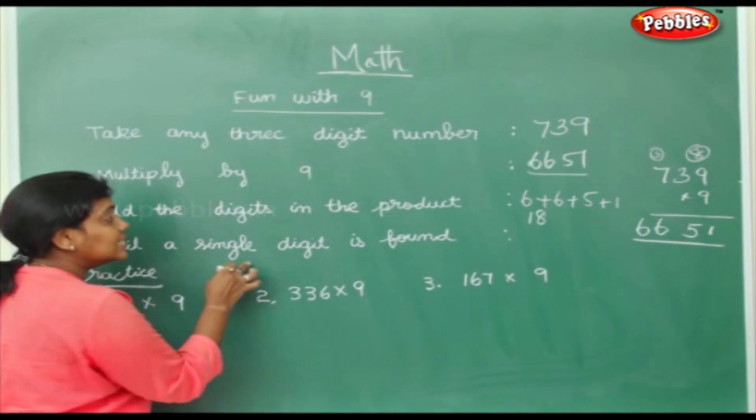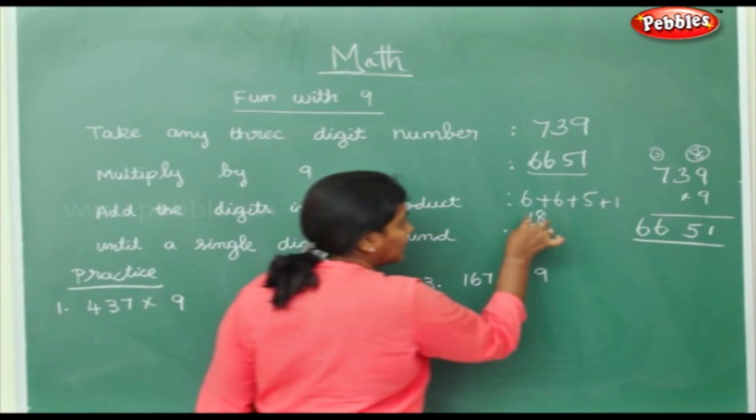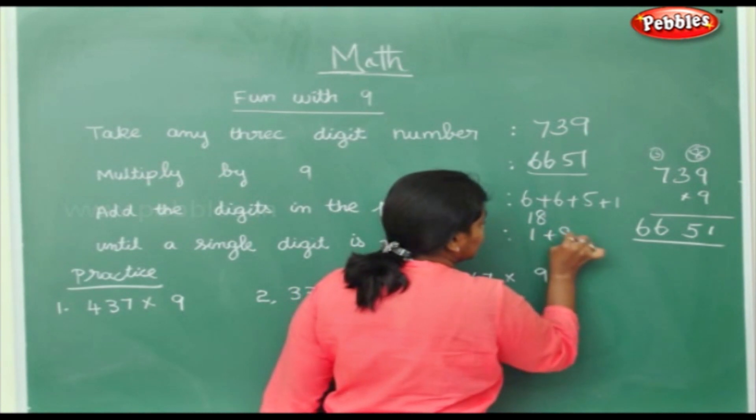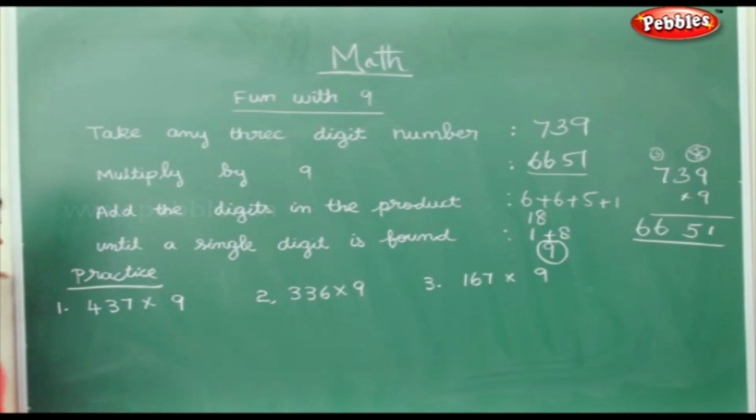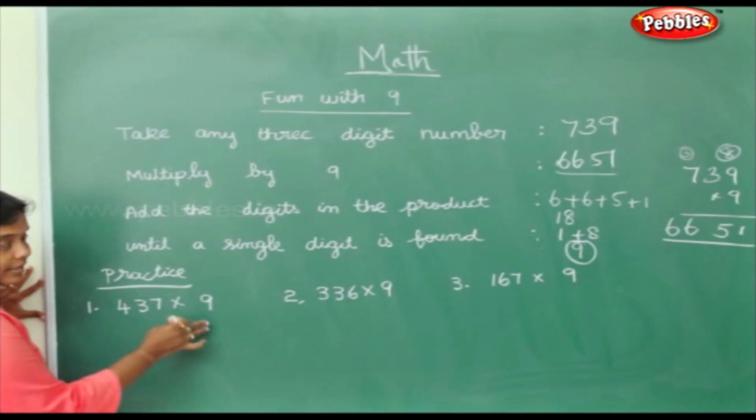Now, until a single digit is formed. So you have to add this again. 1 plus 8. Now you get a single digit. Next we shall practice multiplying by 9.